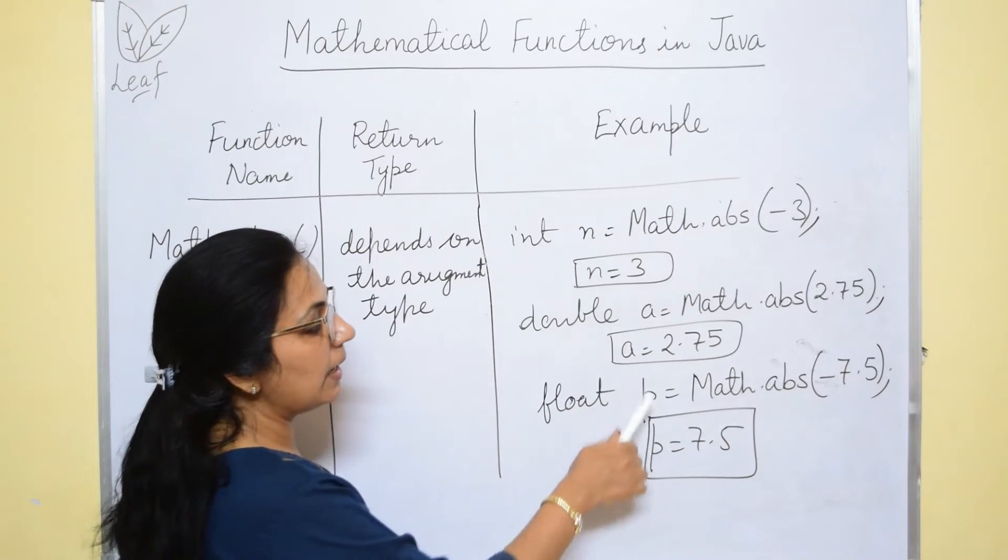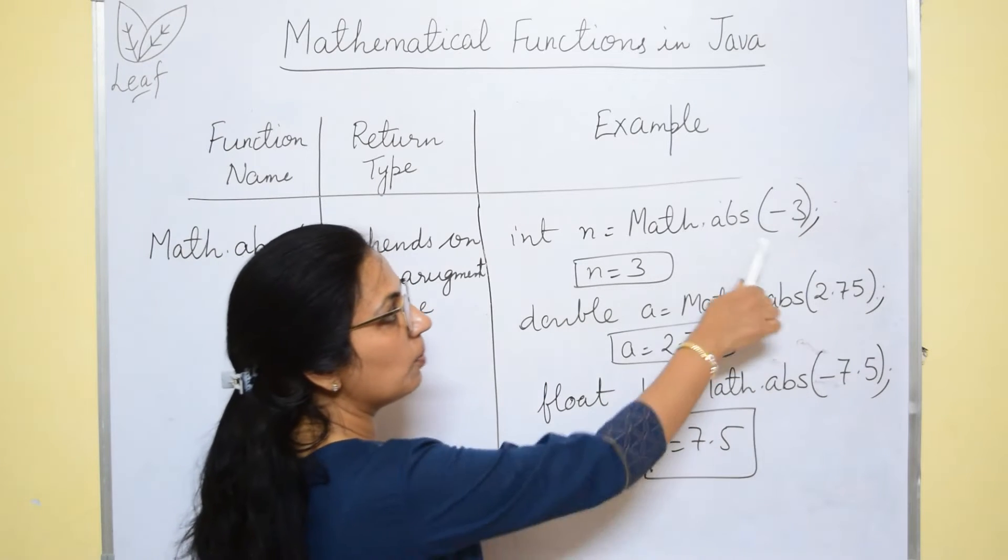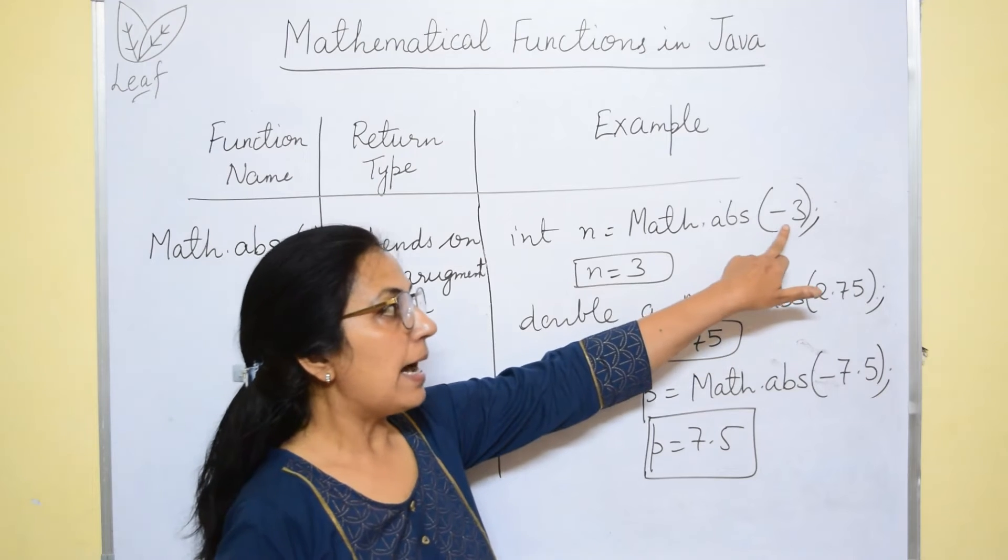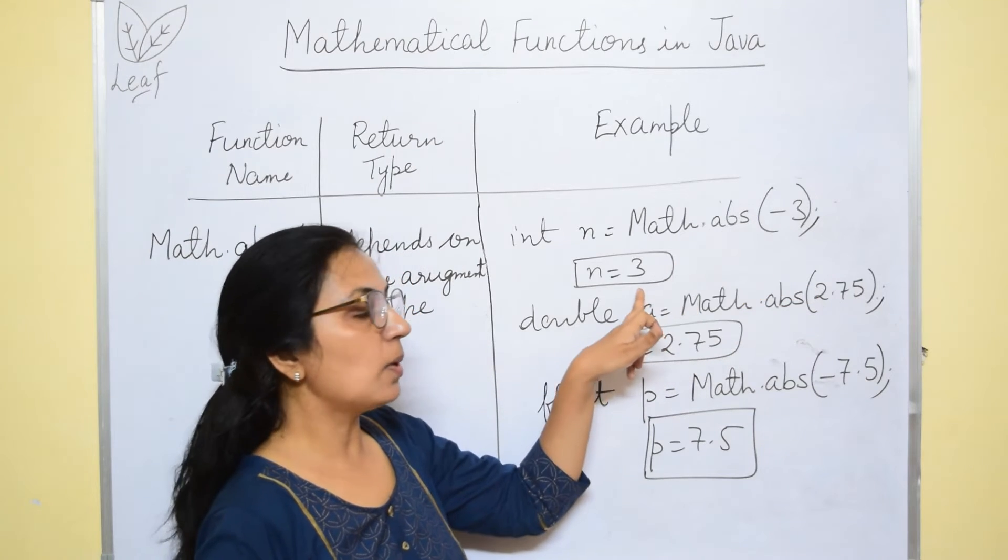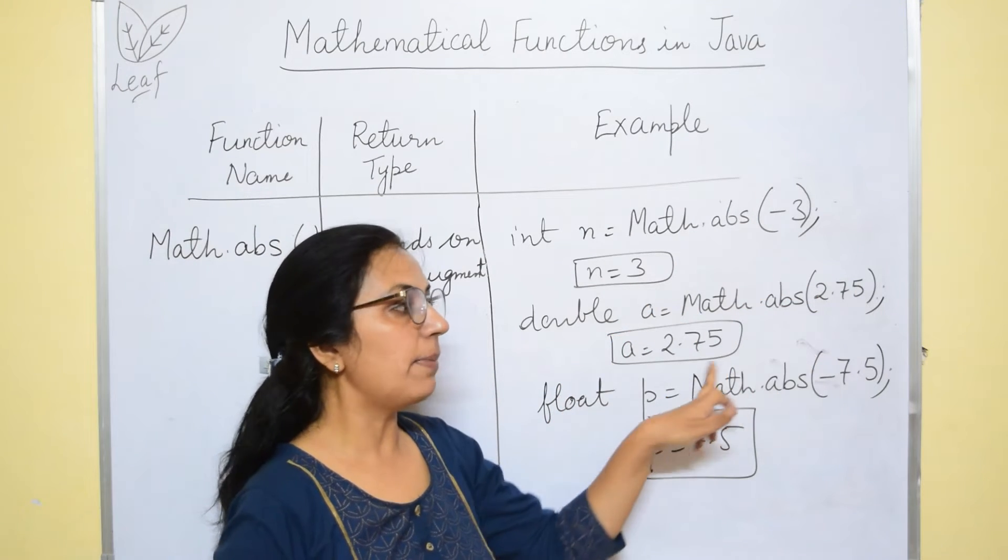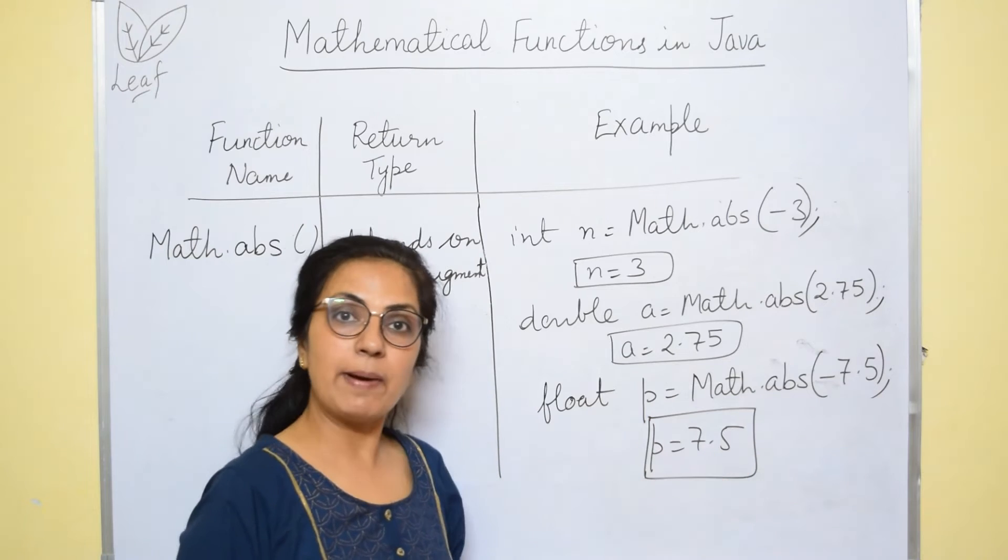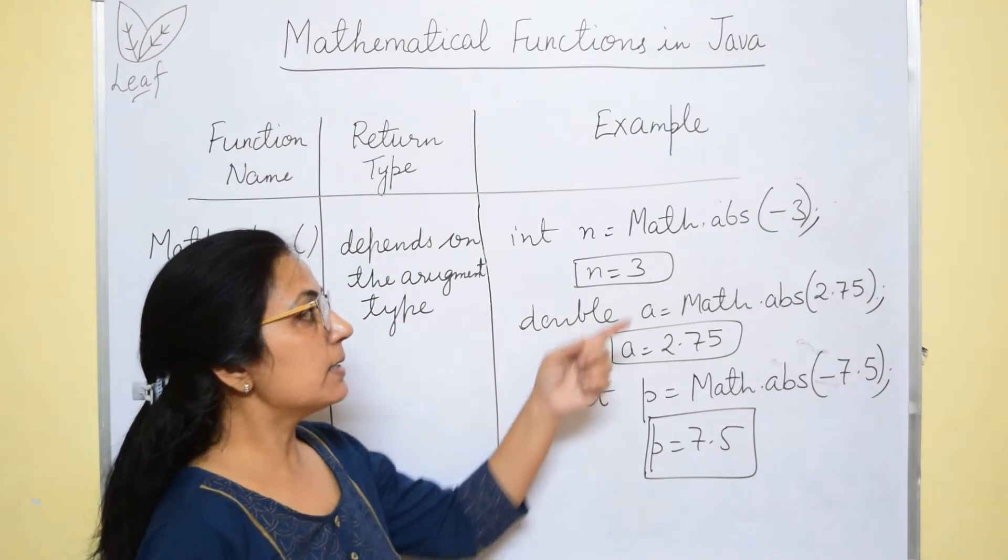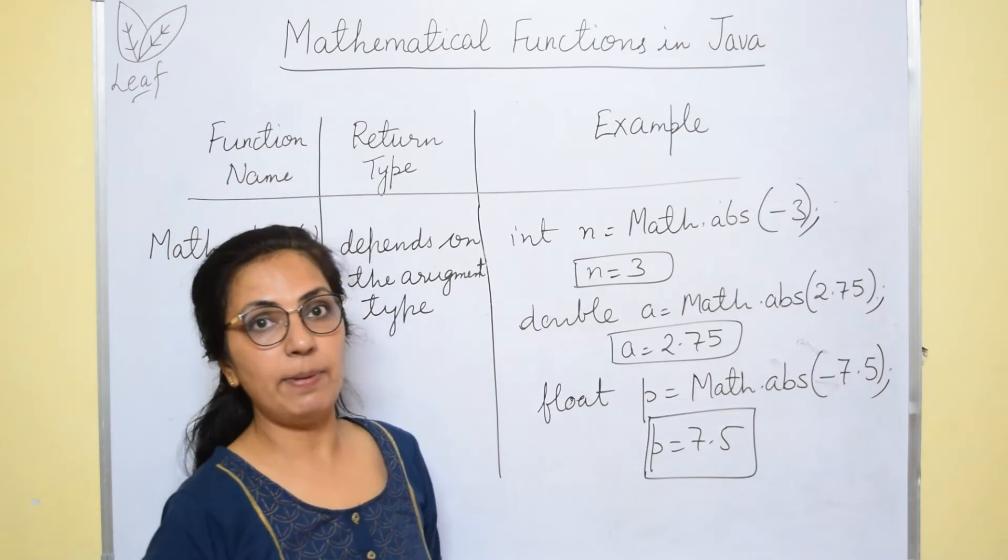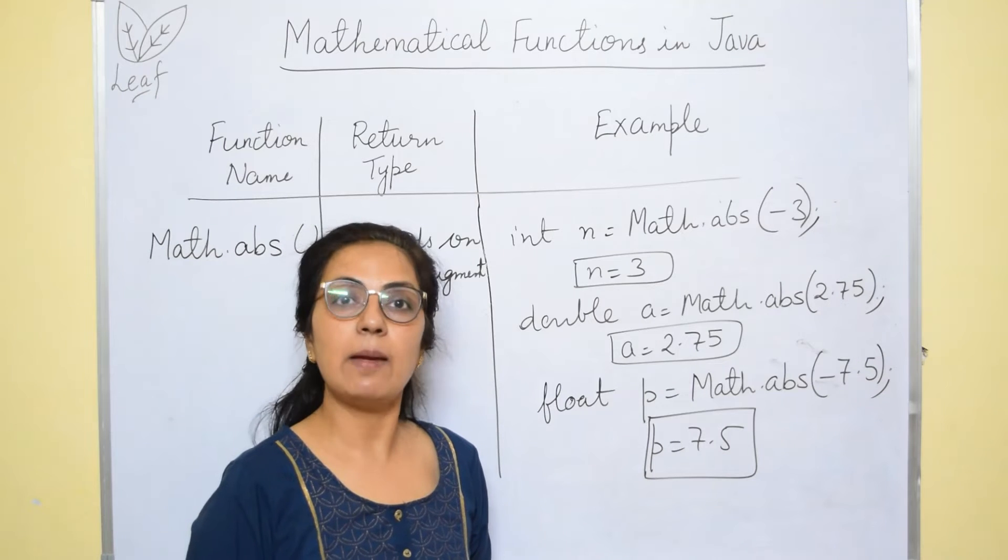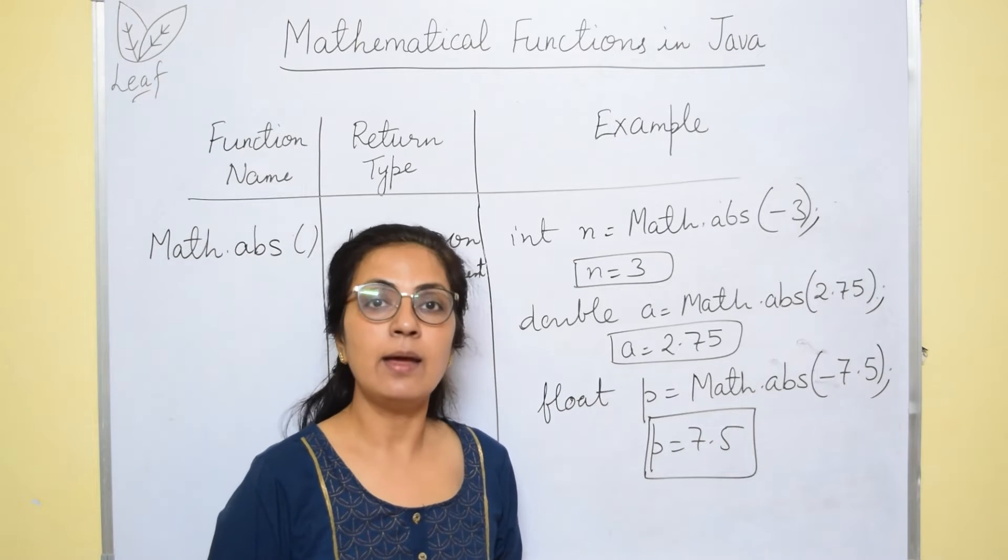The return type depends upon the argument type. If argument is integer, it will return integer. If it is double, double, float, float, byte. Whatever is the argument type, depending upon that, the return type of abs function will be there.